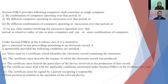Clause 3 of Section 65B states that output from a combination of computers operating over a period, or different computers operating in succession, or any other manner involving successive operation of one or more computers, shall all be considered as one. Taking the example of an IT firm where many computers are present — one process or program is done on one computer and then another. If any crime occurs at that firm, we consider all these computers as a whole when producing evidence in court.